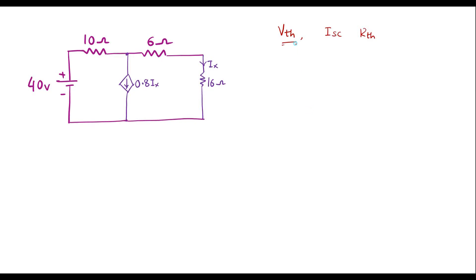First, let me calculate Vth. To calculate Vth, we remove the load resistance. Here we are finding the current through the 16 ohm resistor, so this 16 ohm acts as the load resistor. We have to remove it from the circuit. Let me consider this as terminal A and this as terminal B. When we remove the 16 ohm, no current flows between terminals A and B as it becomes open. Therefore, IX will become 0.